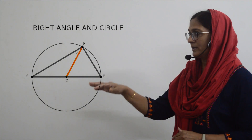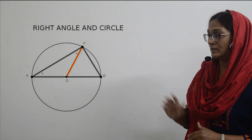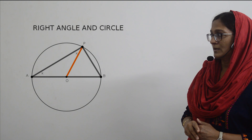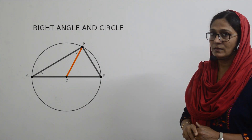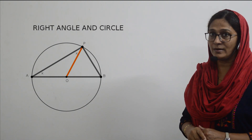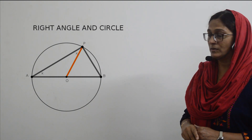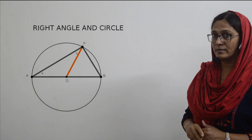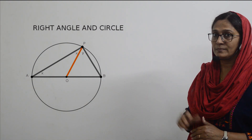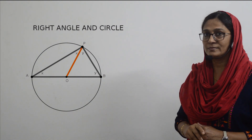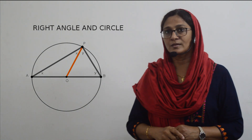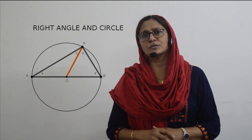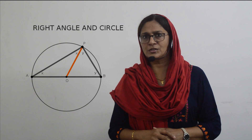Now look at the other triangle: OP and OB are radii, and we have another angle Y at B. Now, as all of you know, the sum of the angles of a triangle is 180 degrees.